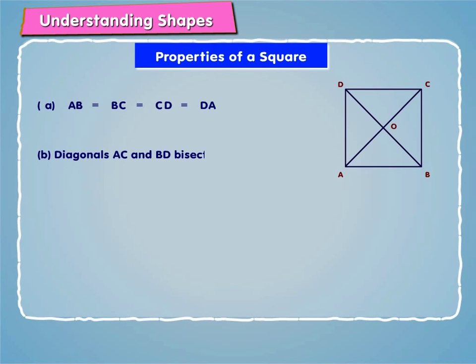Diagonals AC and BD bisect each other at right angles, i.e. AO is equal to OC, BO is equal to OD and angle AOB is equal to 90 degrees.